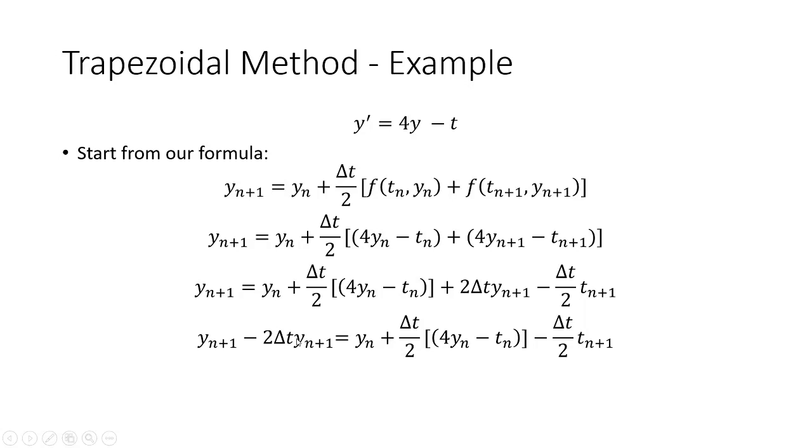And then what we're going to do is we're going to pull a y sub n plus 1 out of these two terms on the left and divide through by that constant, that 1 minus 2 delta t. And we end up with the following explicit formula. So y sub n plus 1 equals 1 over quantity 1 minus 2 delta t times y sub n plus delta t over 2 times 4y sub n minus t sub n plus 1 minus t sub n.